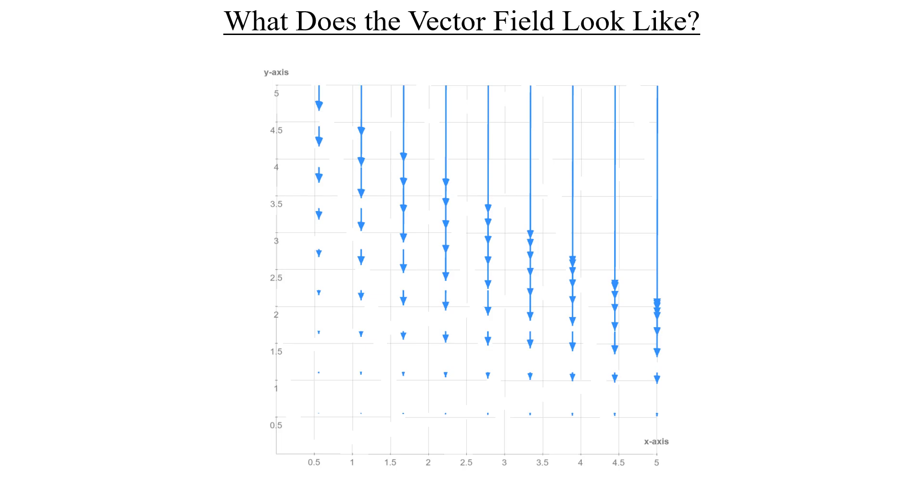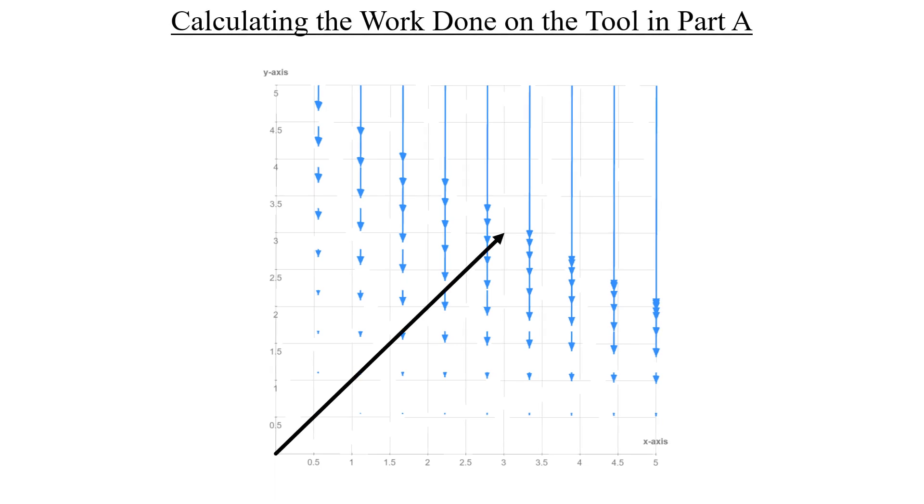Let's start with the diagonal one, in Part A. We'll begin at the origin, and then move directly over to point (3,3). Here's how we'll calculate the work.